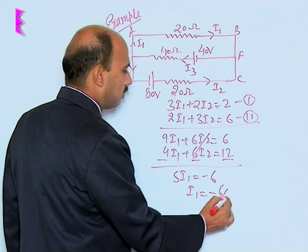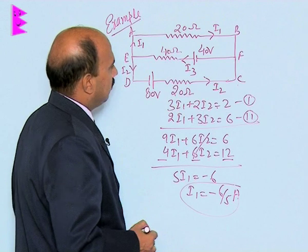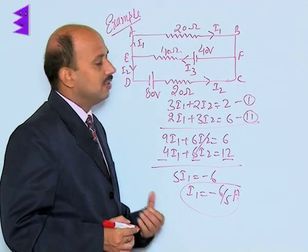I1 is equal to minus 6 upon 5 ampere. This is the application of Kirchhoff's law to calculate current in the given circuit.